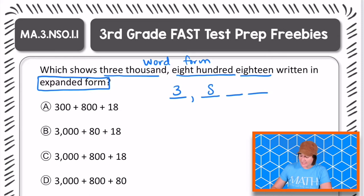So 8 needs to land in that hundreds place, 800, and then 18. So this is the standard form of the number written in word form.